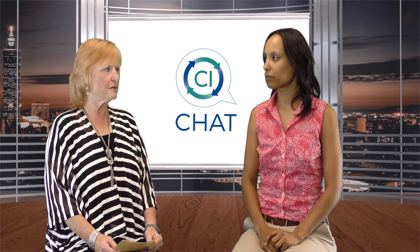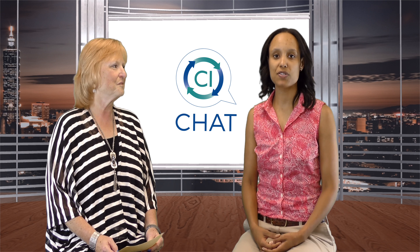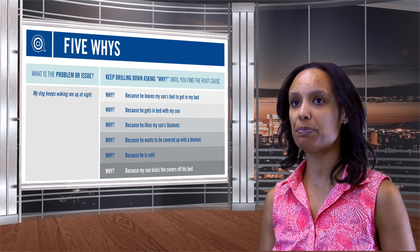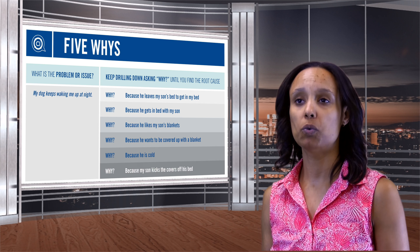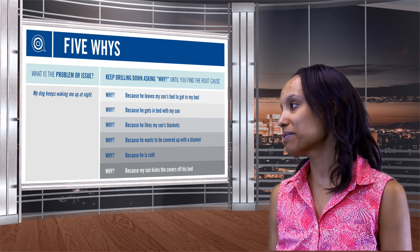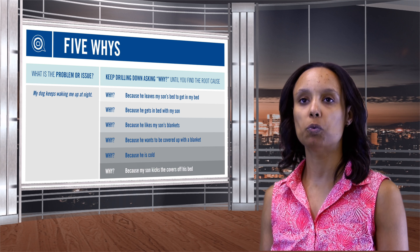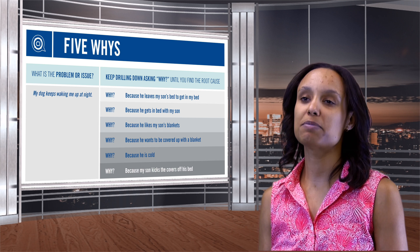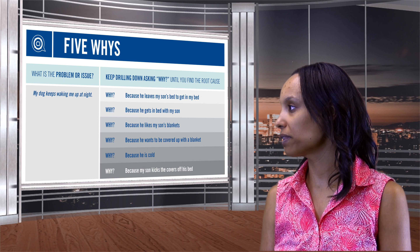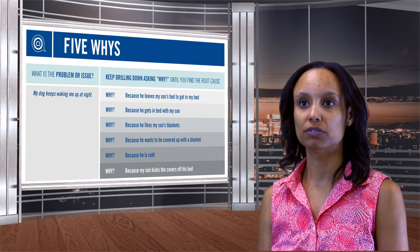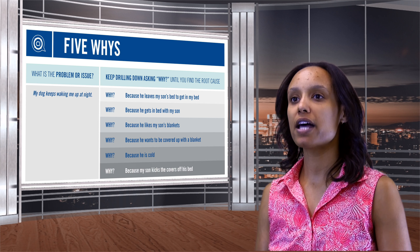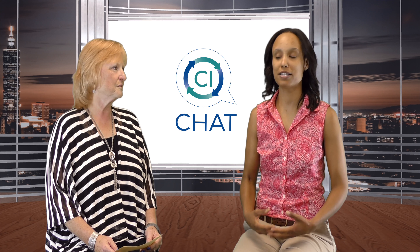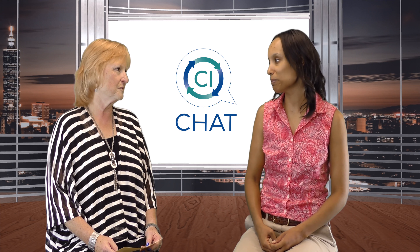Sounds like it would be easy to use. Can you give us an example? Sure. A great example that I have is: why does my dog keep waking me up at night? The first why would be because he leaves my son's bed to get into my bed. Why? Because he starts off the night in bed with my son. Why? Because he likes my son's blankets. Another why: because he wants to be covered up with a blanket. Why does he want to be covered up with a blanket? Because he's cold. And that last why is my son kicks the blankets off of the bed, so he gets into bed with me. The root cause is that he's cold, and the solution would be to put a sweater on.